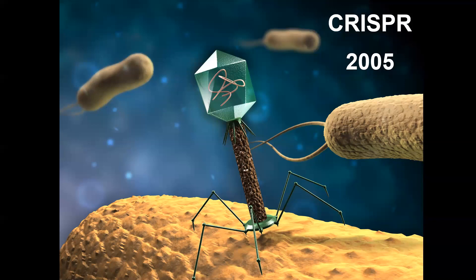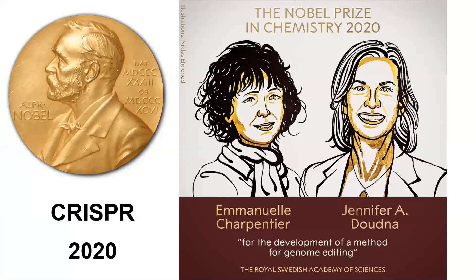Bacteria can defend against these viruses with the help of this CRISPR system. And in 2012, two researchers — Emmanuelle Charpentier on the left and Jennifer Doudna on the right — were the first to realize that the very same system that bacteria use to defend against viruses can be used to edit our DNA. This led to awarding them in 2020, last month, the Nobel Prize in Chemistry for the development of a method for genome editing using these CRISPR tools.